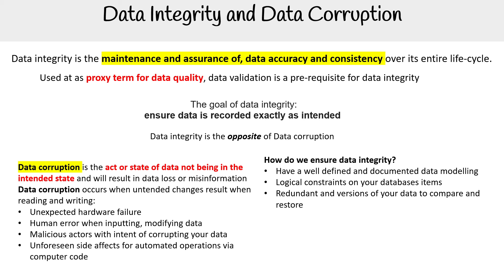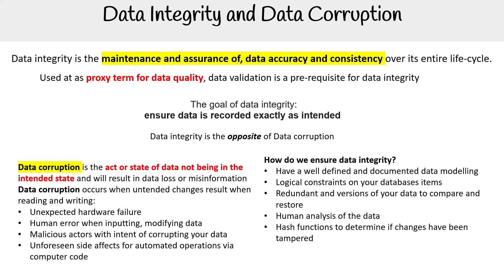You also need redundant versions of your data to compare and restore, so you can bring data back to the state it's supposed to be. Human analysis of the data — periodic checks by data analysts — is also important. Hash functions can determine if changes have been tampered with. You see this when downloading open source software, where an MD5 hash verifies that what you downloaded matches what was expected.